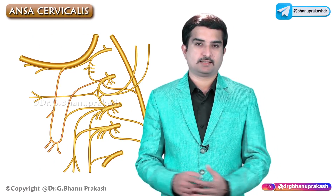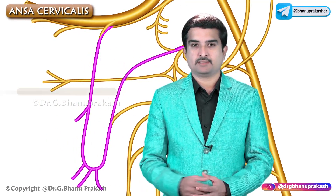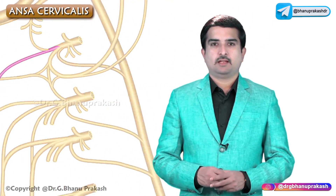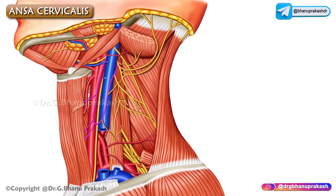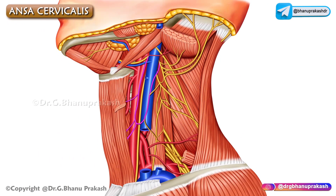Ansa Cervicalis, also known as ansa hypoglossi, is a thin nerve loop which is embedded in the anterior wall of the carotid sheath and lower part of the larynx. It supplies the infrahyoid muscles.